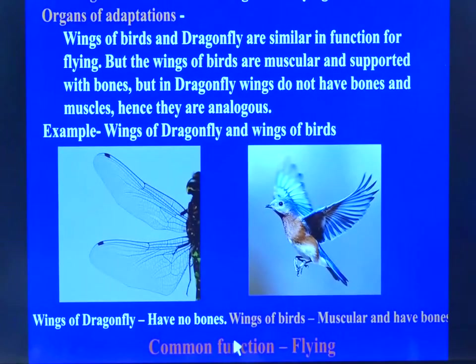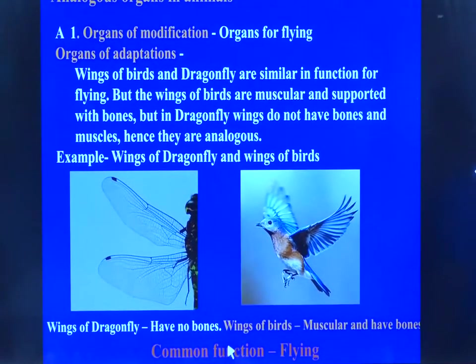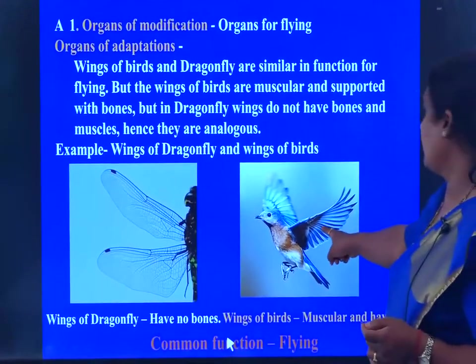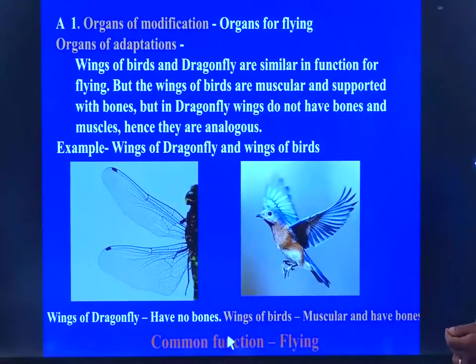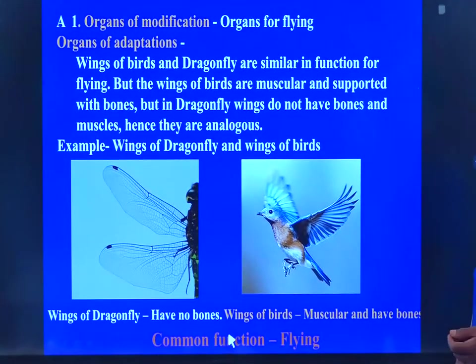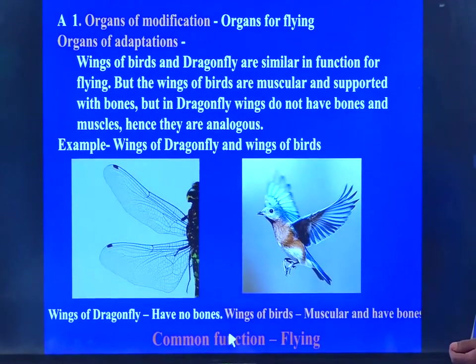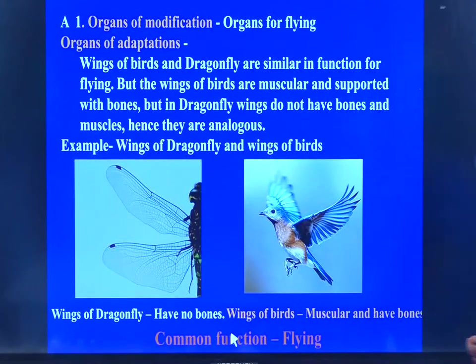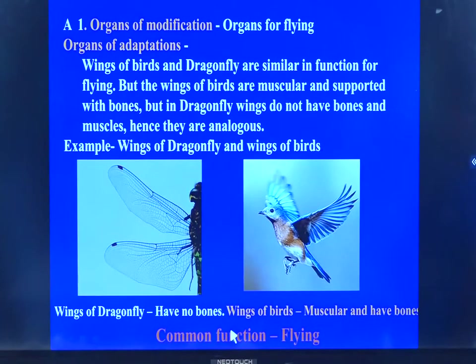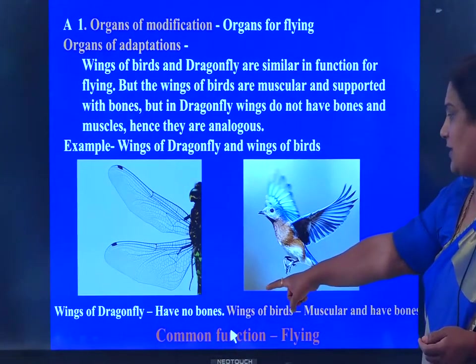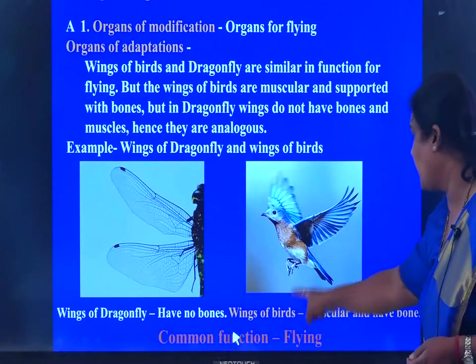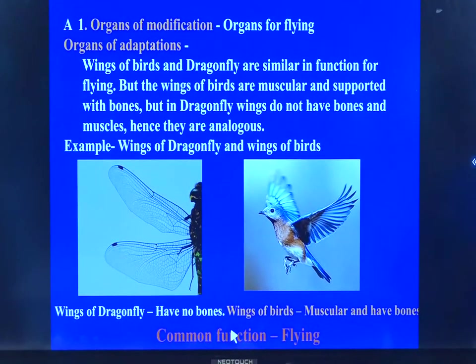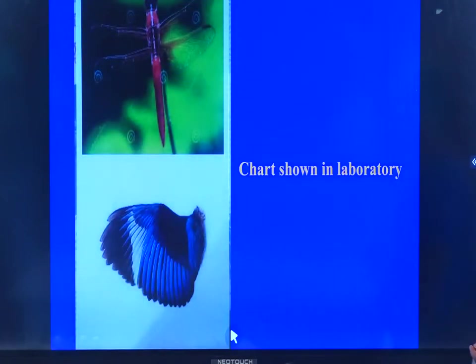Next, we shall know the analogous organs in animals. The organs of modification here are organs for flight. The wings of birds and the wings of the dragonfly are both similar in function — they help the organisms to exhibit flight. But they differ in their origin. The wings of birds have muscles as well as bones, whereas the wings of the dragonfly are simply an extrusion of the skin with no bones. Both have a common function: exhibiting flight. This is the photograph we have in our lab.